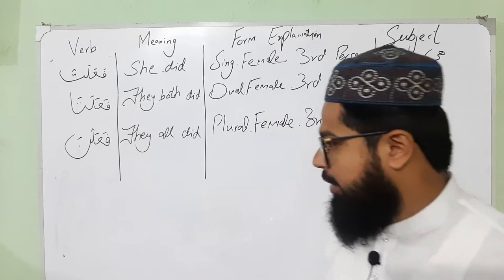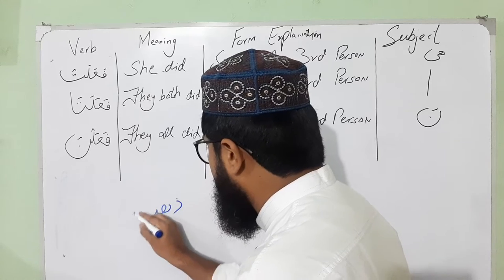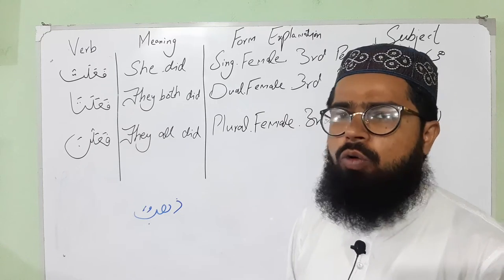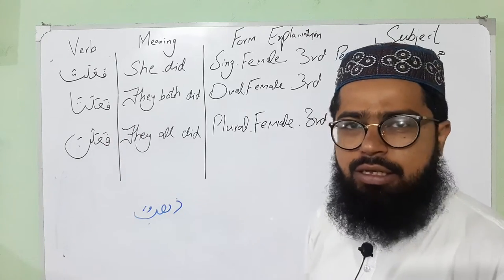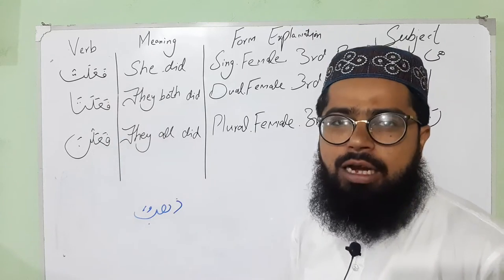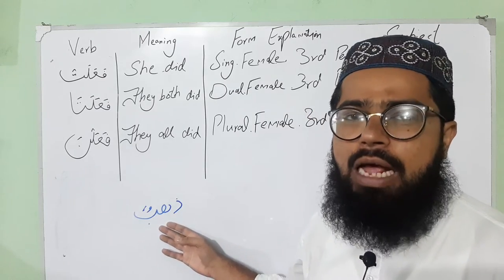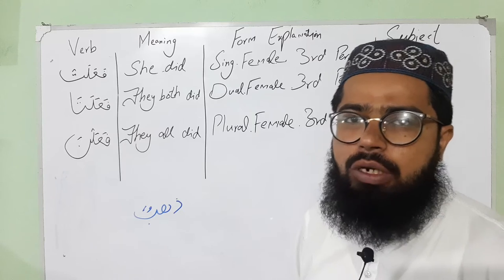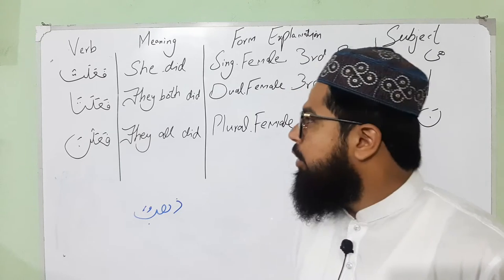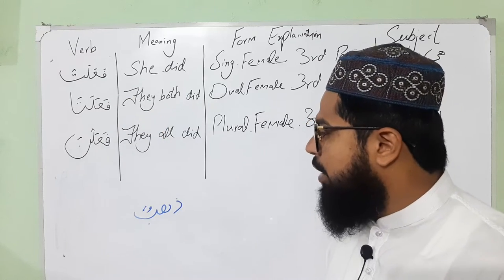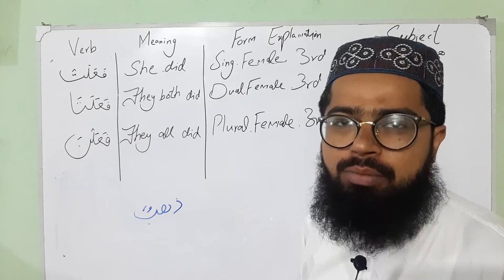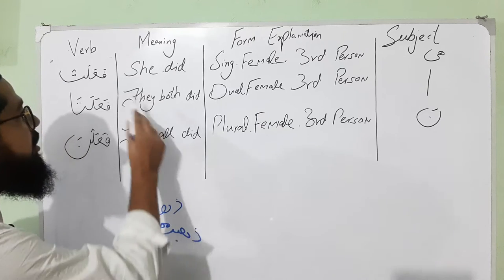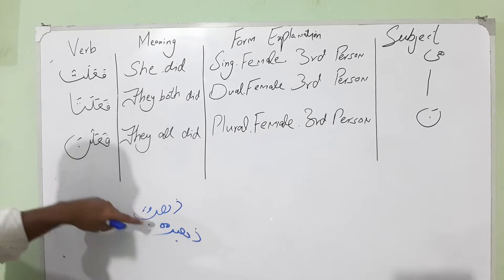For example, 'dhahaba' is a root word which means 'to go somewhere.' If you make a word on the form of faalat, the word formed from dhahaba would be 'dhahabat.' So dhahabat means 'she went.' If we put dhahabat in place of faalat, the meaning would be 'she went.'